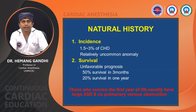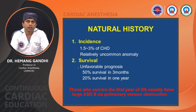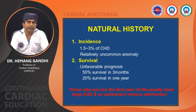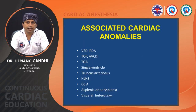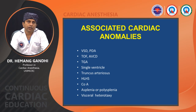The natural history of TAPVC: incidence is 1.5 to 3% of total congenital heart disease. It is a relatively uncommon anomaly with 50% survival at three months and only 20% survival at one year. Those who survive the first year usually have a large ASD and no pulmonary venous obstruction. TAPVC can be associated with other cardiac anomalies like VSD, PDA, tetralogy of Fallot, AVSD, TGA, single ventricle, coarctation of the aorta, or with asplenia, polysplenia, and visceral heterotaxy.